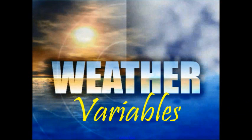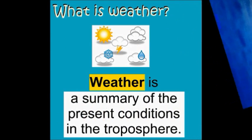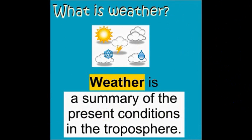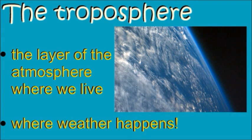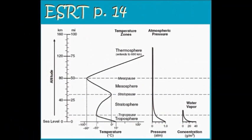This week we're going to begin talking about weather, and specifically weather variables. Weather is a summary of the present conditions in the troposphere. In case you haven't thought about the troposphere in a while, it's the layer of the atmosphere where we live, and this is where weather happens. On page 14 of your reference table, we can see some information about the troposphere.